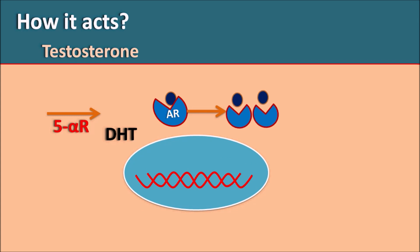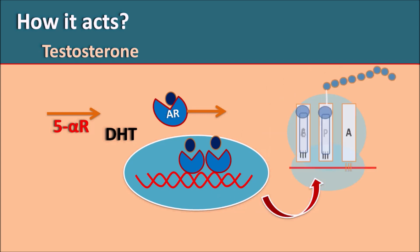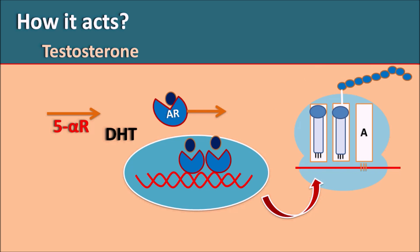The receptors are internalized into the nucleus where they act on DNA to produce gene transcription, followed by protein synthesis. Dihydrotestosterone produces proteins that drive tissue growth, particularly increasing the growth of the prostate gland, resulting in prostate enlargement. Androgens thus increase prostate enlargement, causing decreased urinary flow and increased urinary frequency in patients.